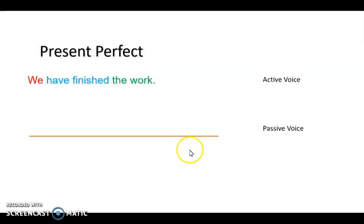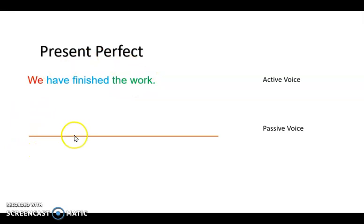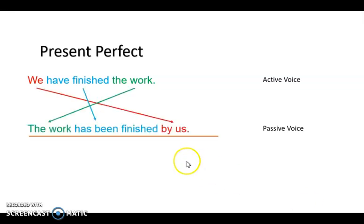Here we have another sentence — present perfect. Active voice: 'We have finished the work' — nosotros hemos terminado el trabajo. Now it's your turn — change it into passive voice. Take a few seconds and pause the video. The answer is: 'The work has been finished by us' — el trabajo ha sido terminado por nosotros.